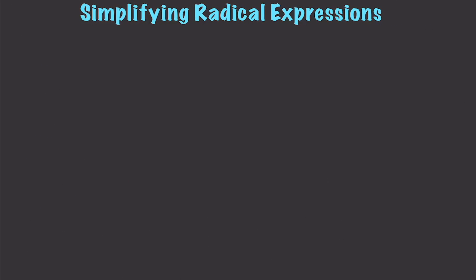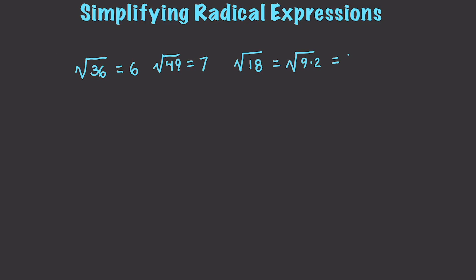Now let's talk about simplifying radical expressions. We can start off with simple things, such as the square root of 36, which is 6, and the square root of 49, which is 7. But when there is no exact solution, what you need to do instead is find the greatest factor that is a perfect square. For example, if we tried to find the square root of 18, we would find that 9 times 2 works, and since 2 is a prime value, that gives us 3 times the square root of 2.